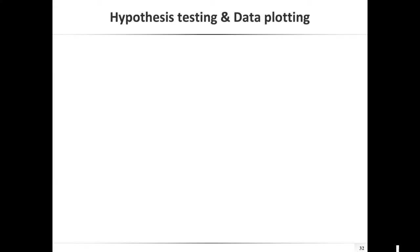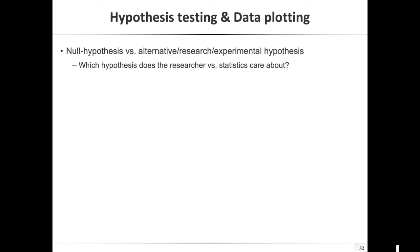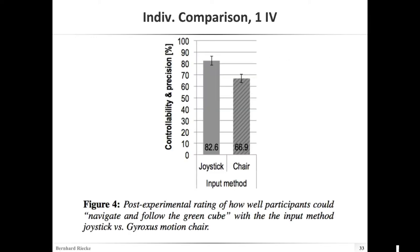The next thing is hypothesis testing and data plotting — is there a way to show what you had in mind and also compare to the actual data? A quick recap: the null hypothesis is basically what you test statistically. The research or experimental hypothesis is what people really care about. The experimental hypothesis predicts an effect you're interested in; the null hypothesis is the one you review where there's no effect.